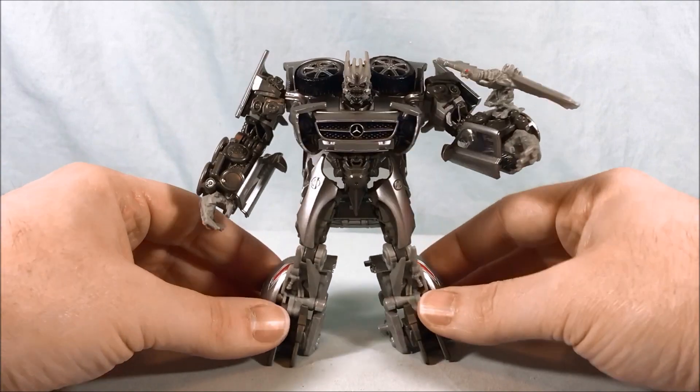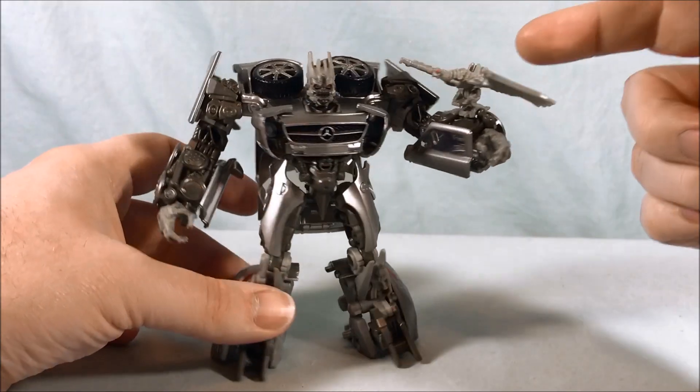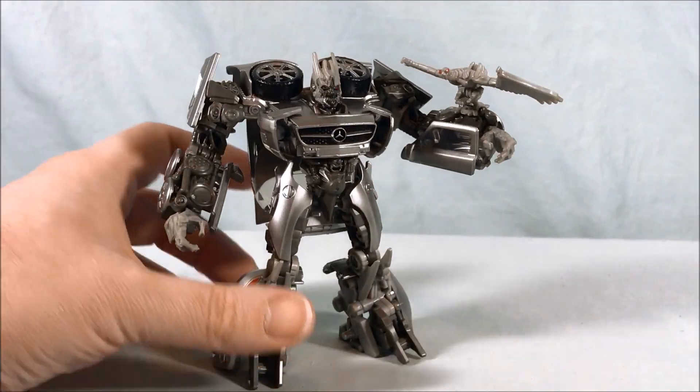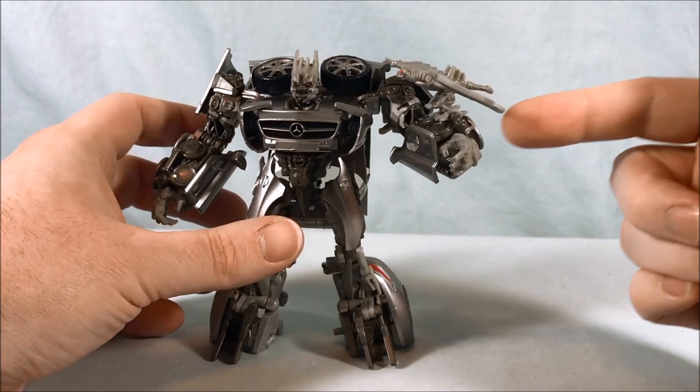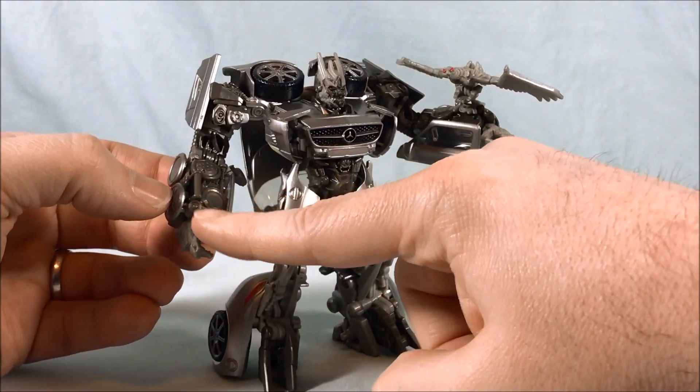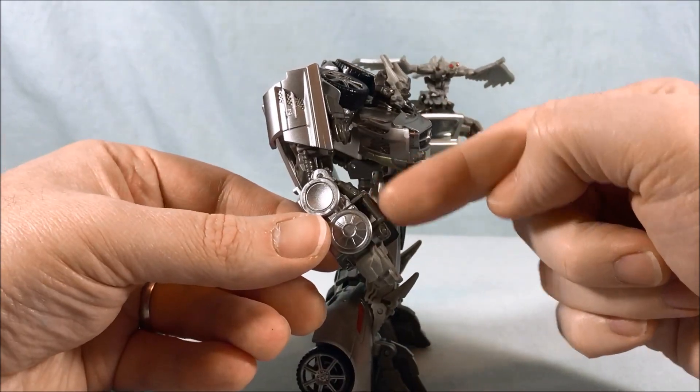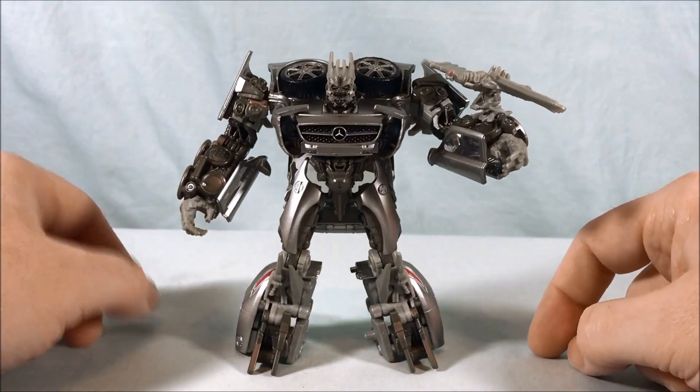Here's a closer look at Soundwave. I think he looks pretty great. I love that he comes with a little Laserbeak. The Laserbeak doesn't transform in any way, it's just kind of a little accessory. But it can clip on to either of the forearms. It has a little perch on each of the forearms so it can clip right on there. I think that's really cool.